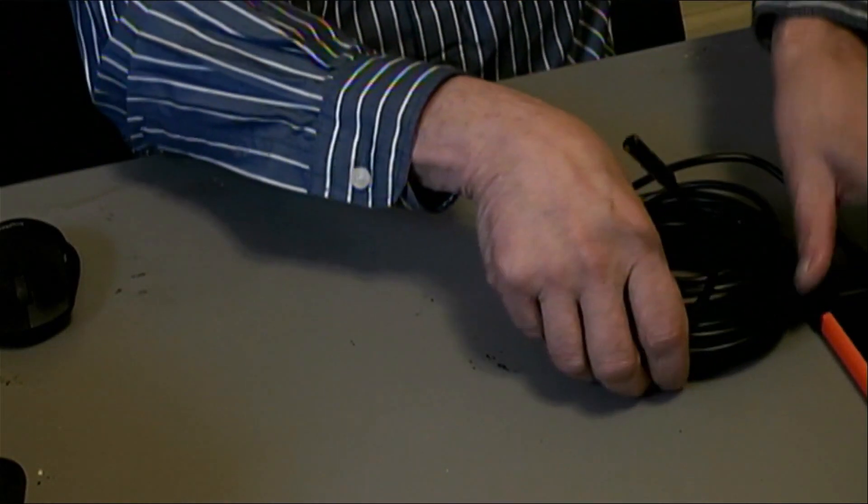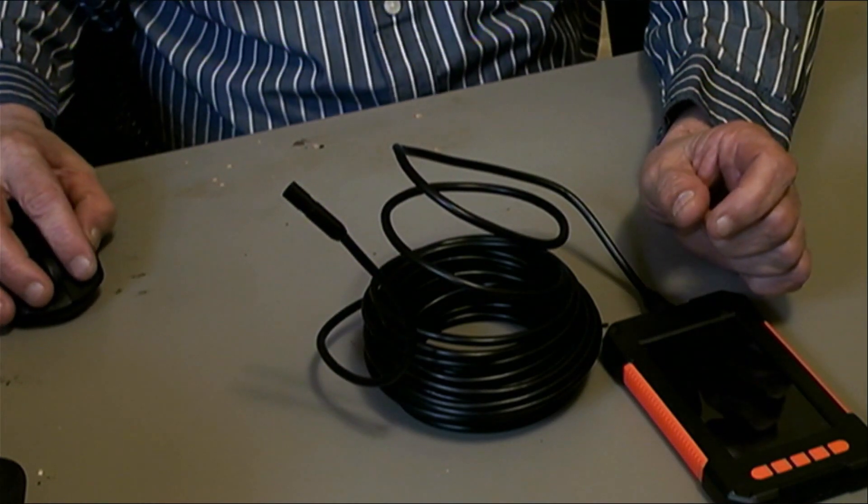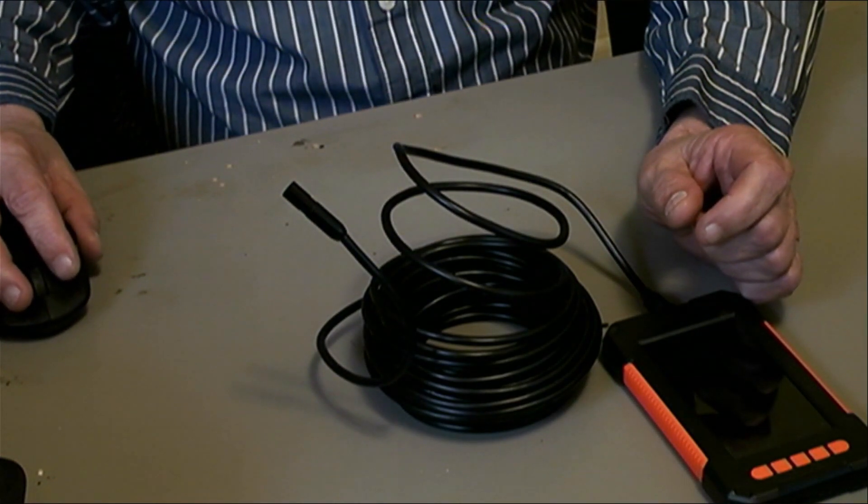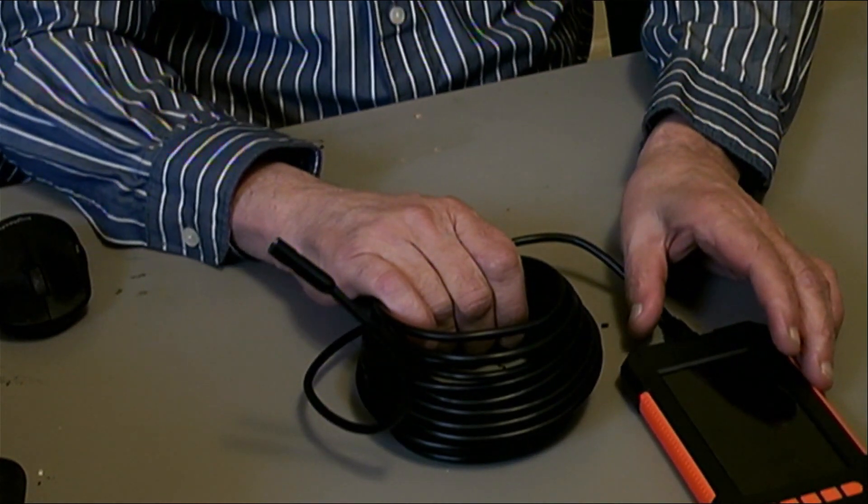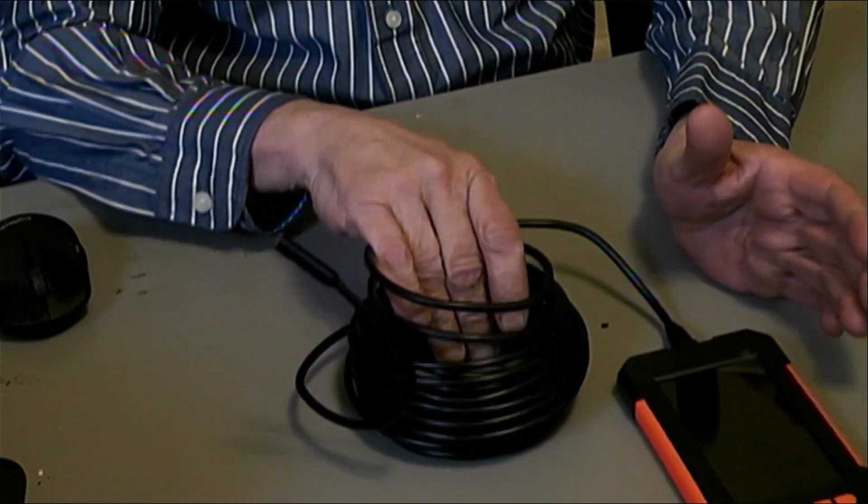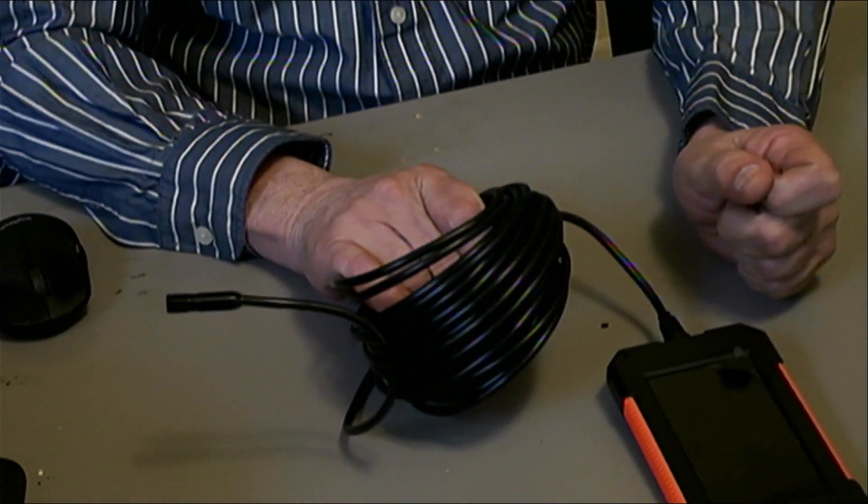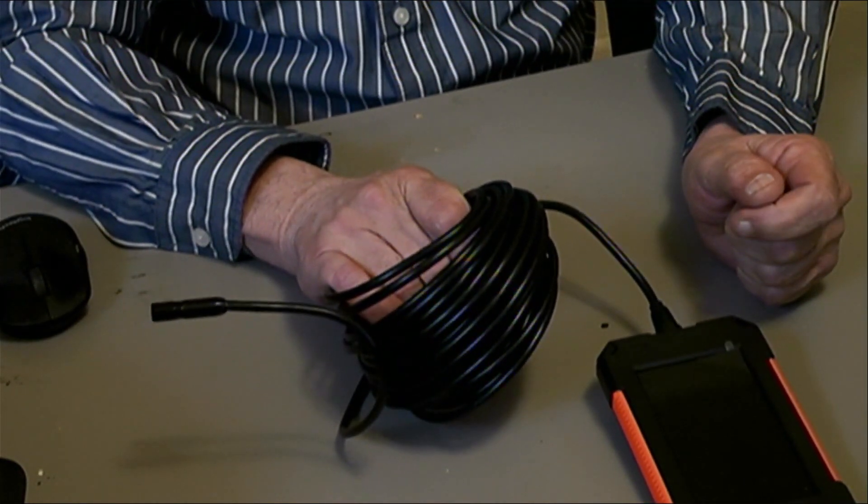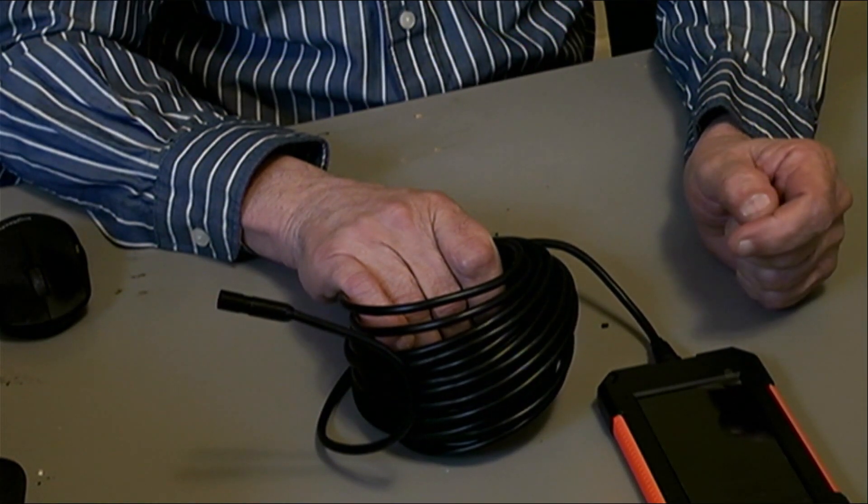But anyway, this camera, it comes in three different lengths as far as this cable is concerned. It comes in two meters or equivalent would be 6.6 feet. It comes in five meters equivalent would be 16.4 feet and 10 meters equivalent to 32.8 feet.